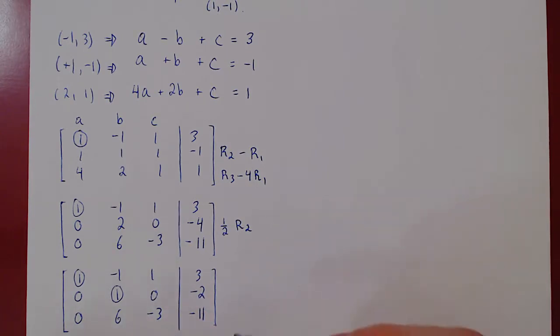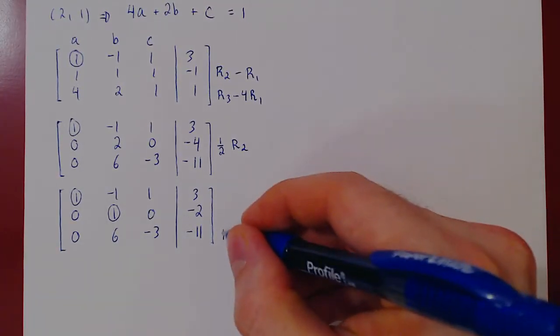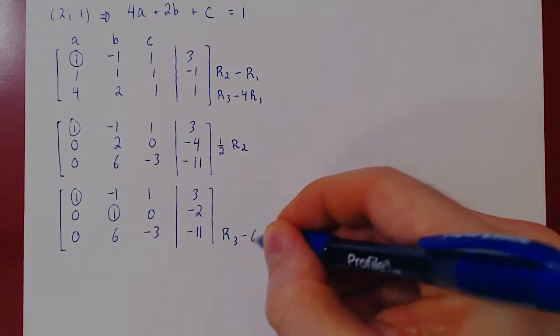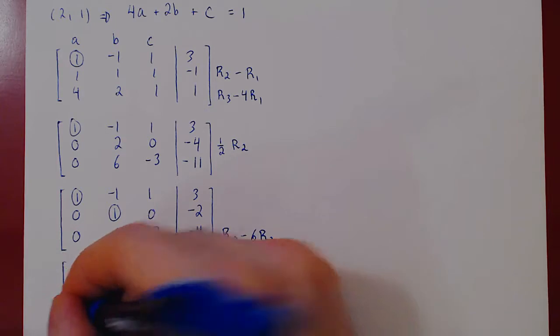We can now kill the entry below it by doing row three minus six row two. We can recopy our first two rows.